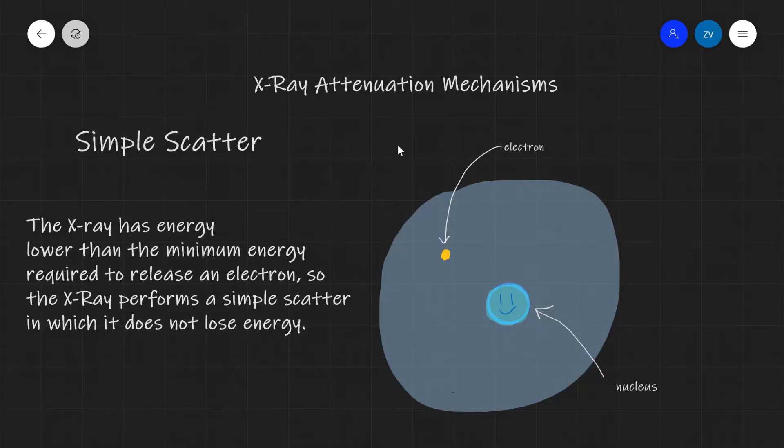Hello everyone, welcome back to Z-Physics. Today we're going to be talking about X-ray attenuation mechanisms. The mechanisms that we're going to be looking at in this video are simple scatter, and then straight after that we'll look into Compton scattering, pair production, and finally the photoelectric effect.